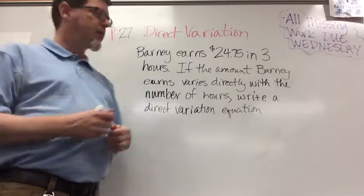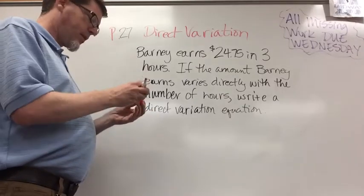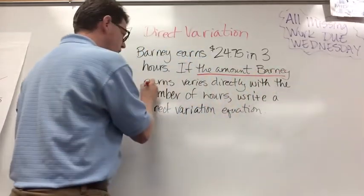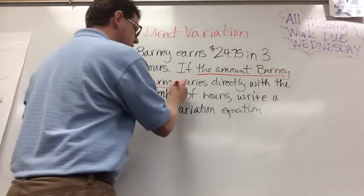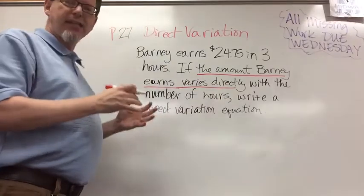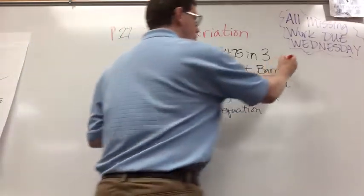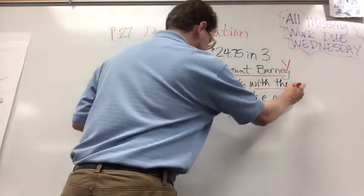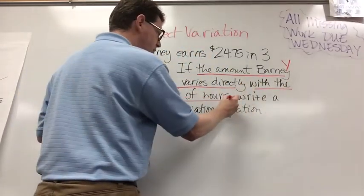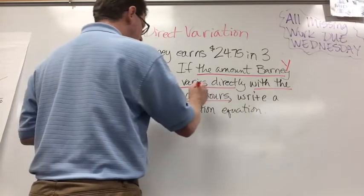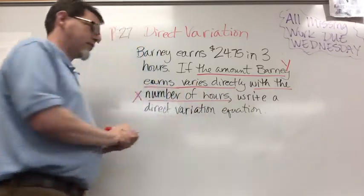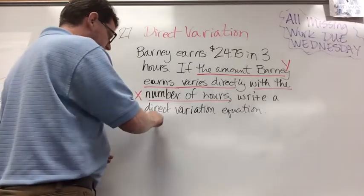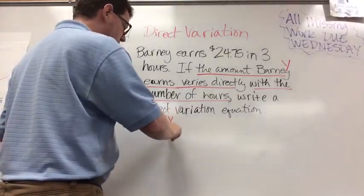So let's remind ourselves. It says that the amount Barney earns varies directly. That has got to be our y. With what? With the number of hours, then that must be our x. So how do we figure out the slope? The slope is y over x. So m equals y over x.